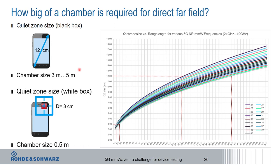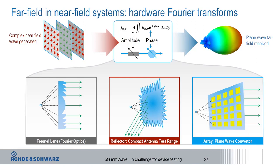A graph shows that for a 12 cm quiet zone requirement across 24–40 GHz, the required range length is between 2.3 and 3.9 meters, meaning chamber sizes of 3 to 5 meters. Direct far field testing is straightforward — you're simply in the far field region — but the physical chamber requirements can be substantial, especially at lower FR2 frequencies with larger devices.